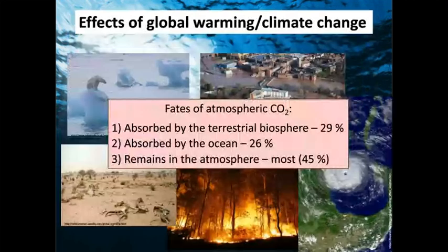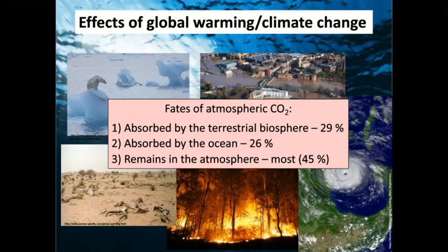In terms of the carbon dioxide that's emitted, 29% is absorbed by the biosphere, about 45% remains in the atmosphere, and that leaves roughly a third to be taken into the ocean — that's why we call the ocean a carbon sink. If it wasn't for the ocean, there would be a lot more carbon dioxide in the atmosphere than there currently is.